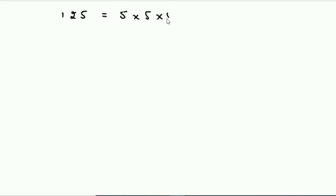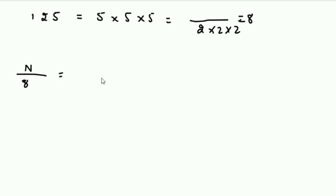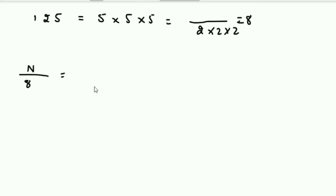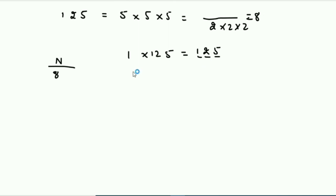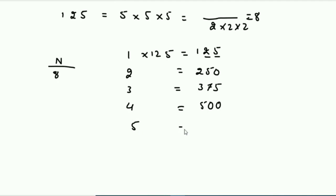The same trick works for 125, which equals 5×5×5. So divide the number by 2×2×2, which is 8. When dividing by 8, the remainder can range from 0 to 7. Remainder 1 → last three digits are 125; remainder 2 → 250; remainder 3 → 375; remainder 4 → 500; remainder 5 → 625; remainder 6 → 750; remainder 7 → 875; remainder 0 → 000.